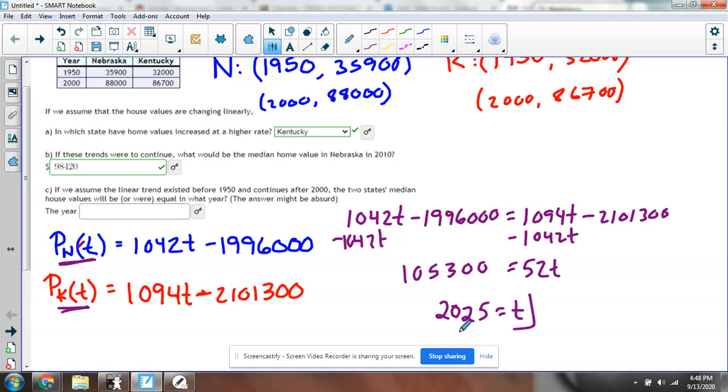So according to our math, in the year 2025 the median home values of each of those cities will be the exact same.